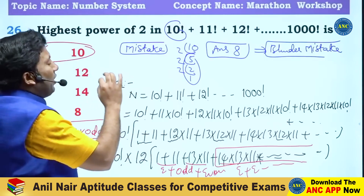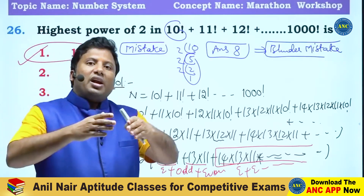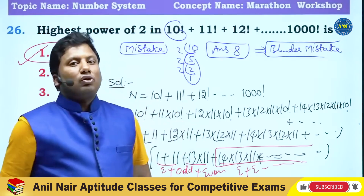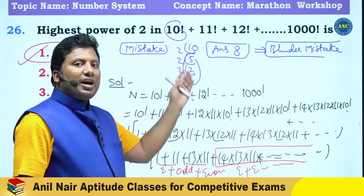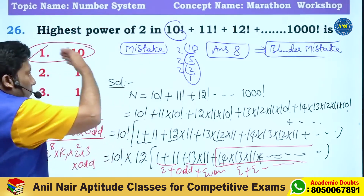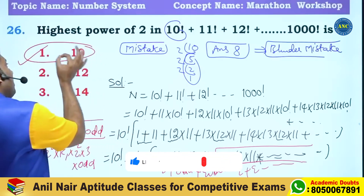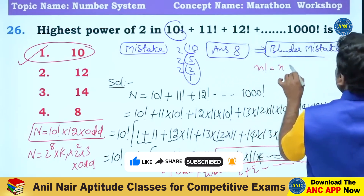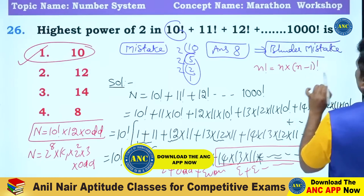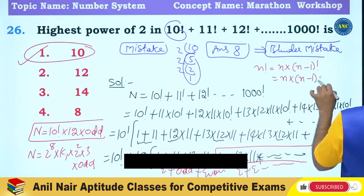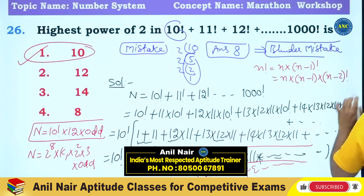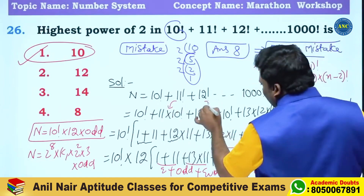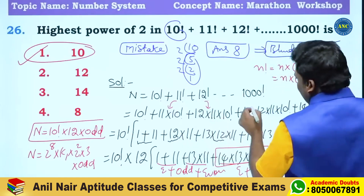This is a very good question which will make you understand factorial highest powers. In textbooks you may have done highest power for a single factorial or subtraction of two factorials, but here so many factorials are added. The key concept used is: n factorial equals n into (n minus 1) factorial. For example, 11 factorial equals 11 into 10 factorial.